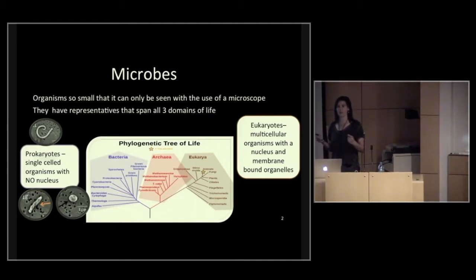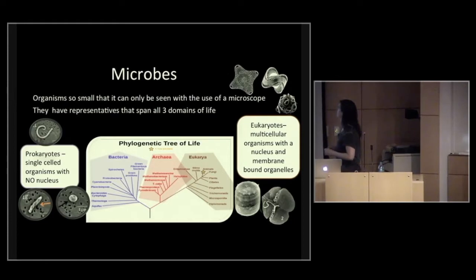Eukaryotes are multicellular organisms with a nucleus and membrane-bound organelles. Who here is a eukaryote? Good. This will try to be participation-based. Sorry about the dark lighting, but it's to help the slides. These are good representatives of some other microbes. These are eukaryotes. These are all phytoplankton species. We'll get into these later.